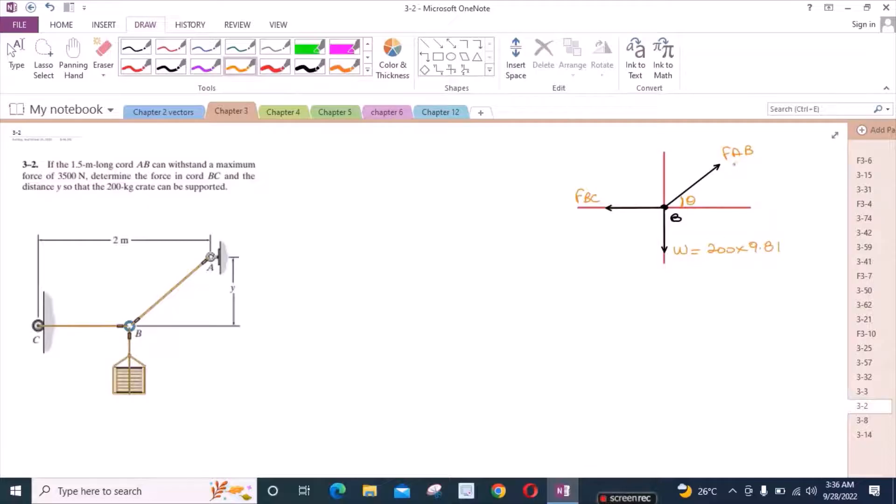Now we can also resolve this FAB force into two components along X and Y axis. So we have one vertical component and one horizontal component. Let's call this FAB sin theta. And this component is FAB cos theta.